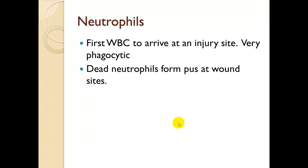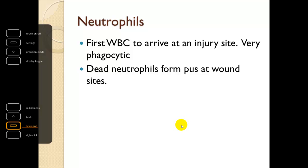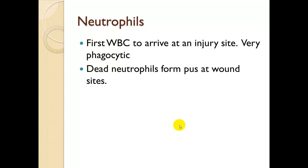Neutrophils are the first white blood cell to arrive at an injury site and are very phagocytic — they like to eat everything they come into contact with. If someone has a purulent or pushy discharge, this is from dead neutrophils that tried to consume a pathogen but didn't quite get the job done. They act like dead soldiers — this is what actually generates pus. For example, the material you squeeze from a pimple on your face is dead neutrophils.